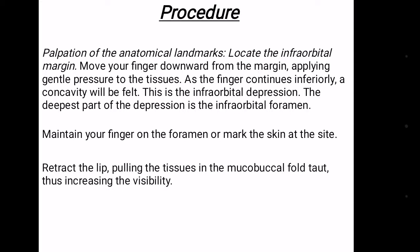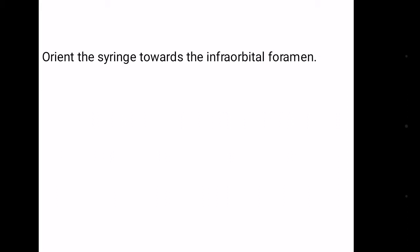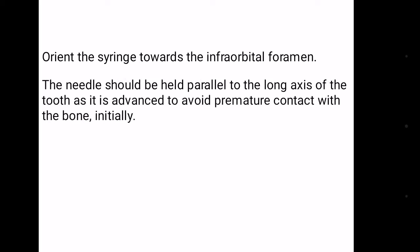Retract the lip, pulling the tissue in the mucobuccal fold taut, increasing visibility. Take a preloaded syringe and insert the needle into the height of the mucobuccal fold over the first bicuspid with the bevel facing the bone. Orient the syringe towards the infraorbital foramen. The needle should be held parallel to the long axis of the tooth as it advances to avoid premature contact with the bone initially.